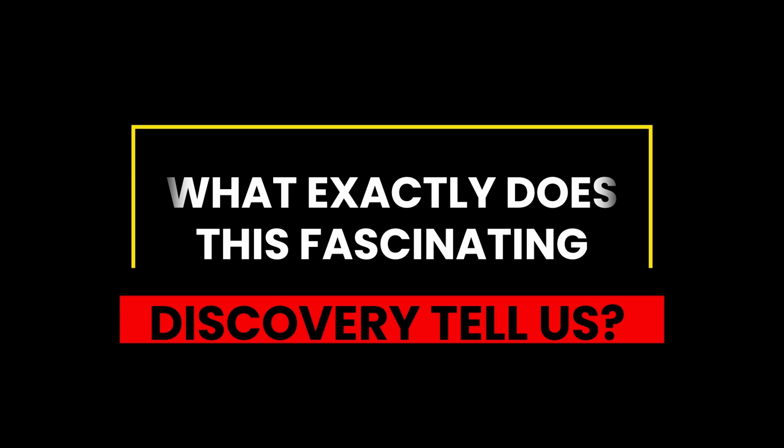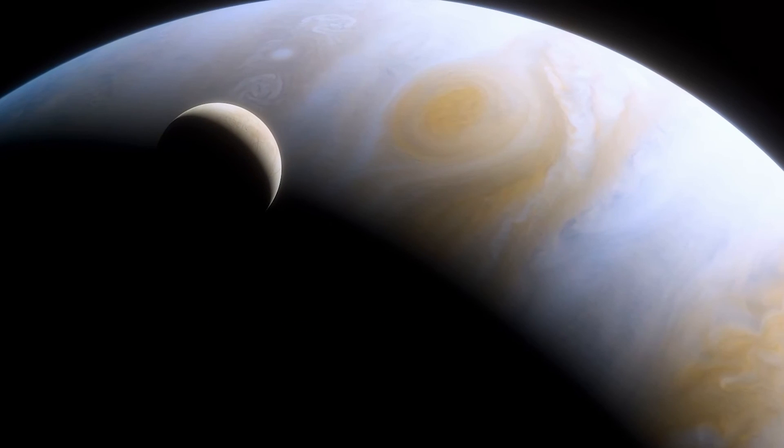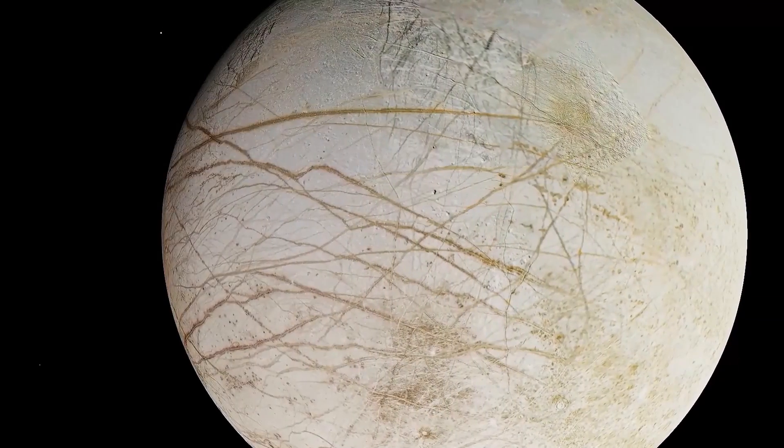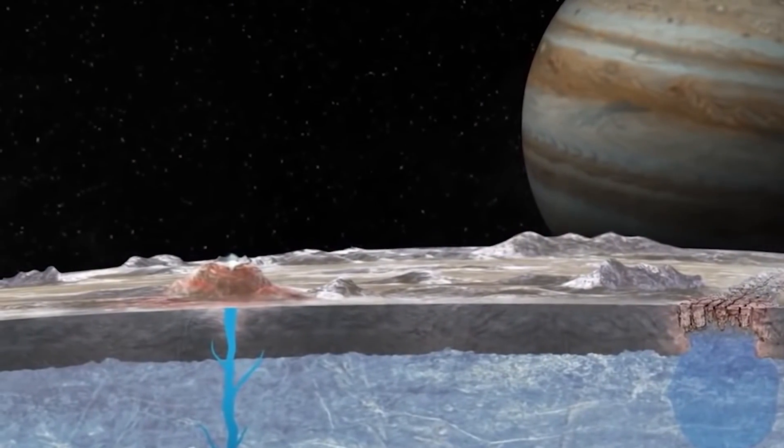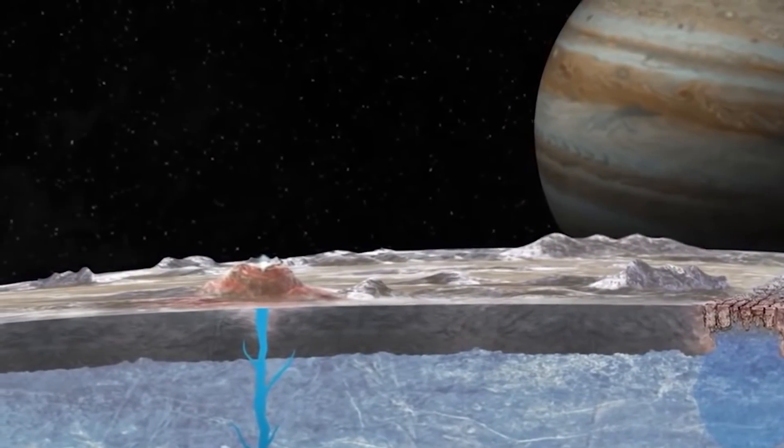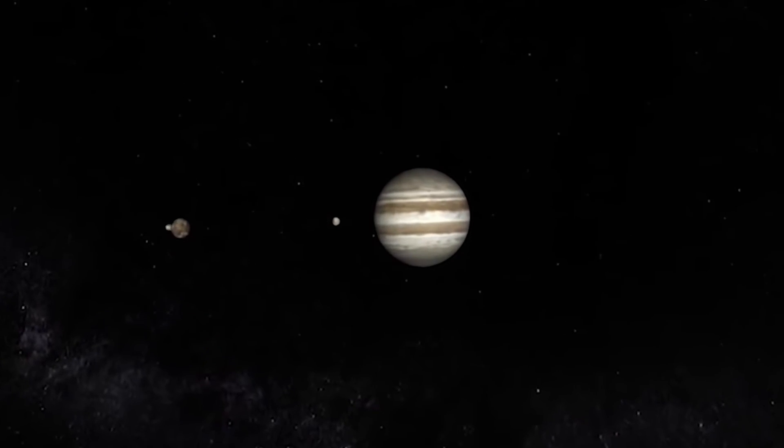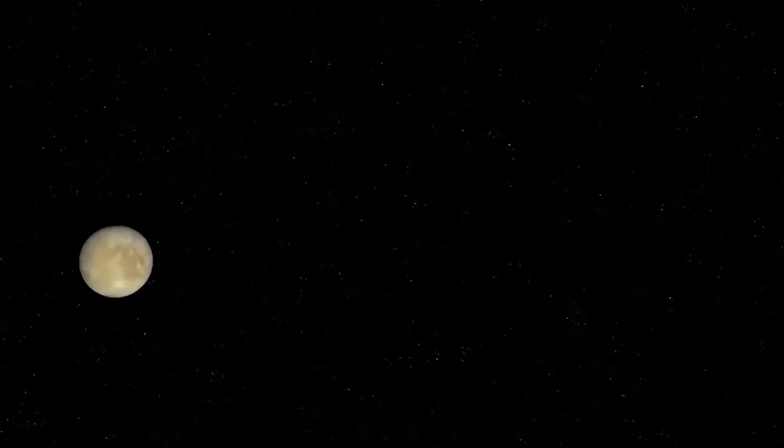But what exactly does this fascinating discovery tell us? Well, it suggests Europa's ocean and surface actively exchange material. And if there's a way for surface gunk to get down into the ocean, maybe there's also a way for ocean goop to get up to the surface. Goop containing alien microbes, perhaps.